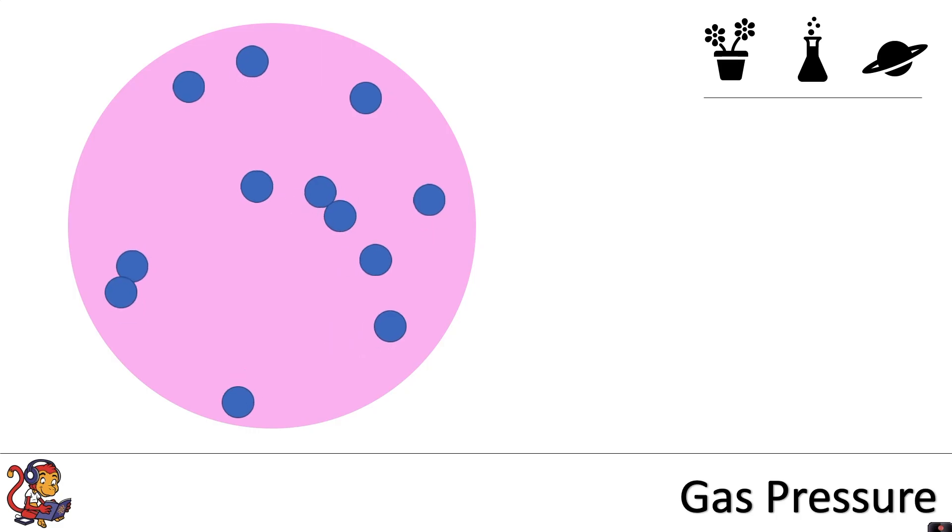If travelling in the right direction, some of those particles will make collisions with the walls of the balloon. At the point that they make a collision, they will exert a force on the balloon and the pressure is calculated by the force exerted by the particles per meter squared of the balloon surface.